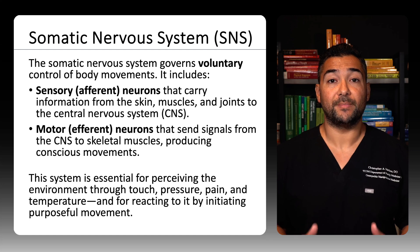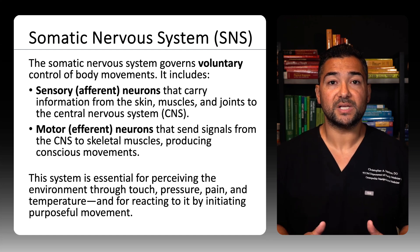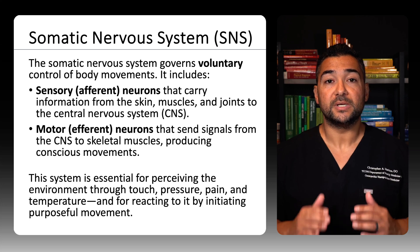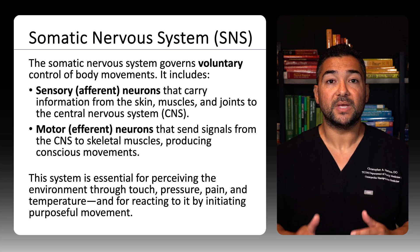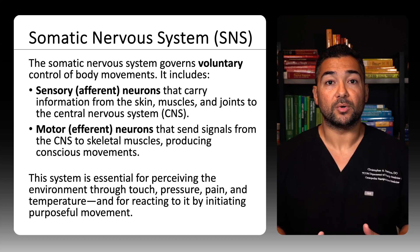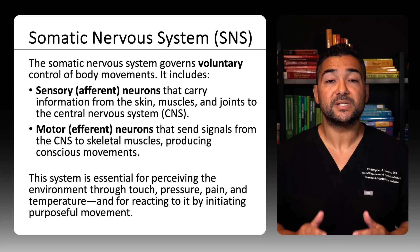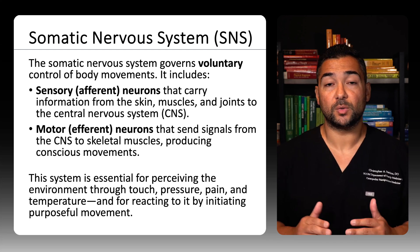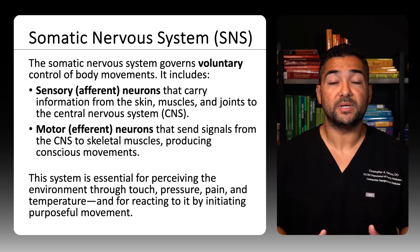Let's begin with the somatic nervous system. This is the branch of the nervous system responsible for voluntary movement. It includes sensory neurons that bring information from the body to the spinal cord, and motor neurons that control skeletal muscle. This system is essential for how we perceive and respond to the world through touch, movement, and posture.